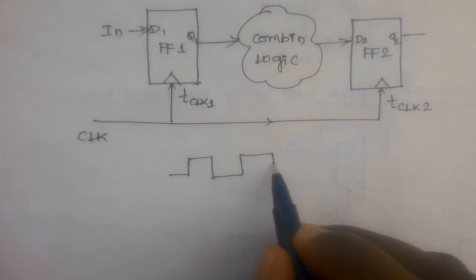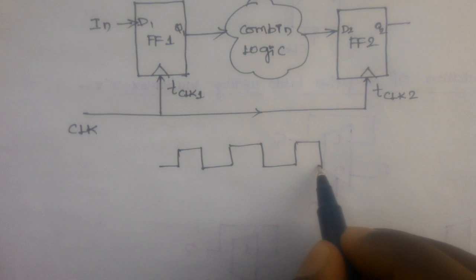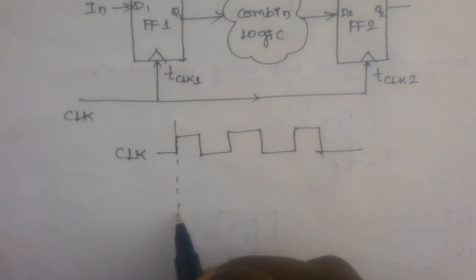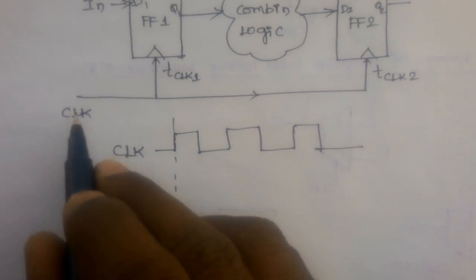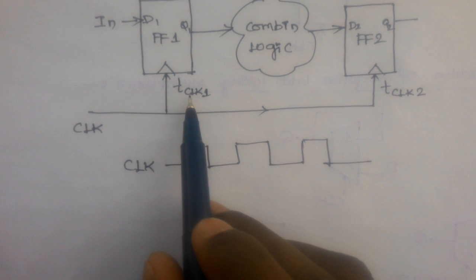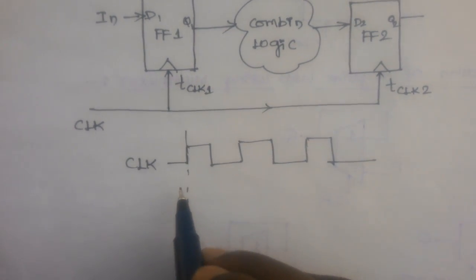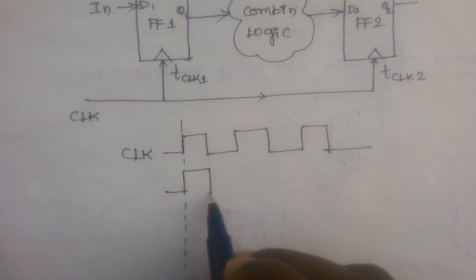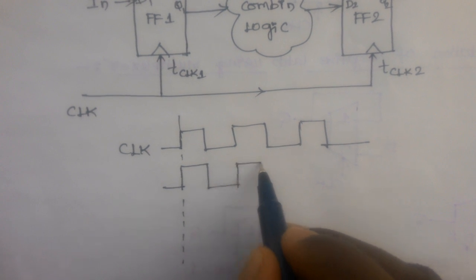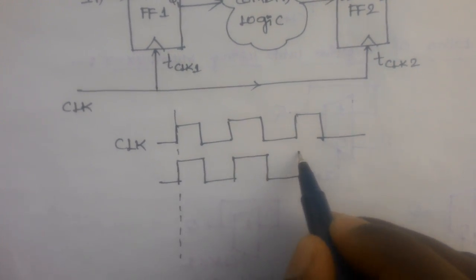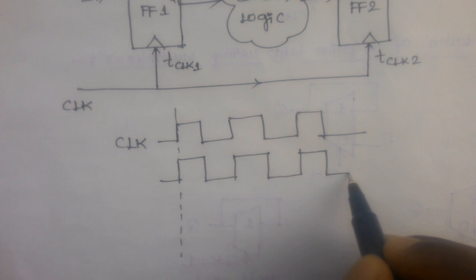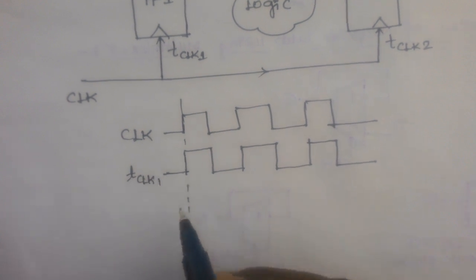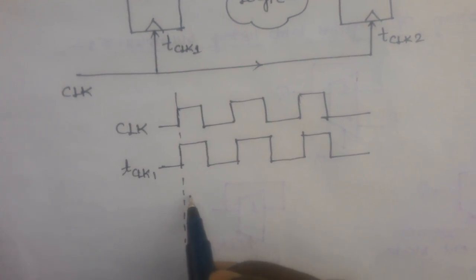Let us consider this is the global clock signal. Let us take this as the reference line for the global clock. Suppose I am receiving clock 1 — this is T clock 1 — similar to my reference clock or the global clock.